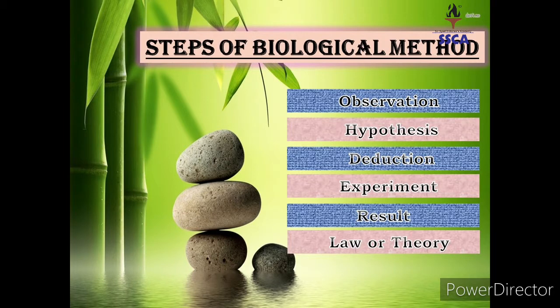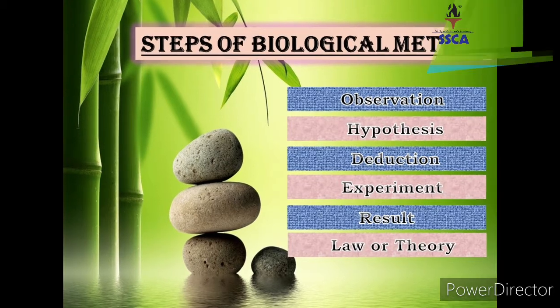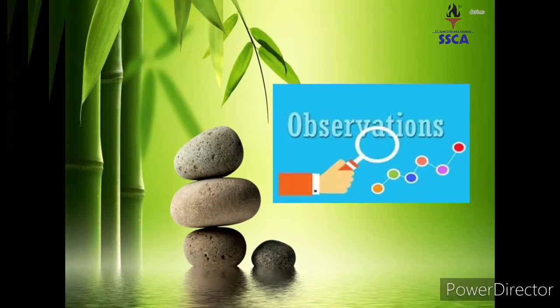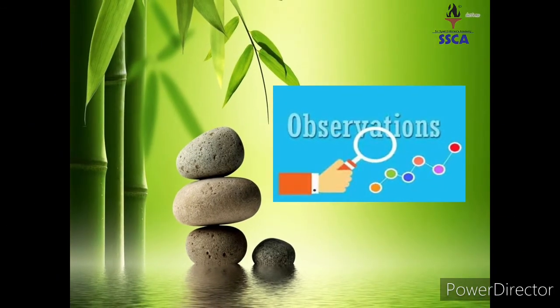The steps of biological method are: observation, hypothesis, deduction, experiment, result, and law or theory. So students, the first step is observation.